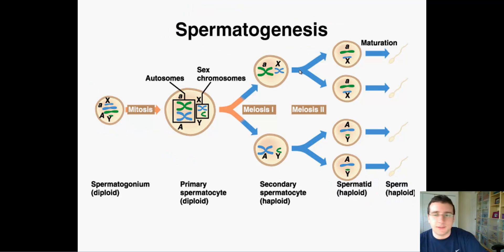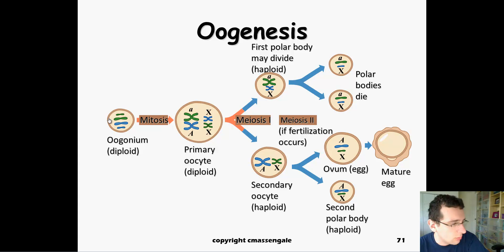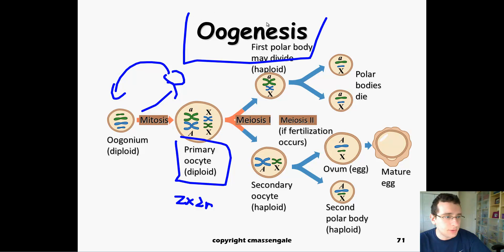Now, oogenesis will be similar, and it will start with the oogonium, which is that diploid germ cell which can undergo mitosis and make two daughter cells. One of them is just so that the process can restart, and then the other one will actually become the primary oocyte, which is the diploid two times 2N cell. Notice that in this case we have two X's, as it should be for the sex chromosomes, because that's the female we're talking about, because females are the ones that do oogenesis.